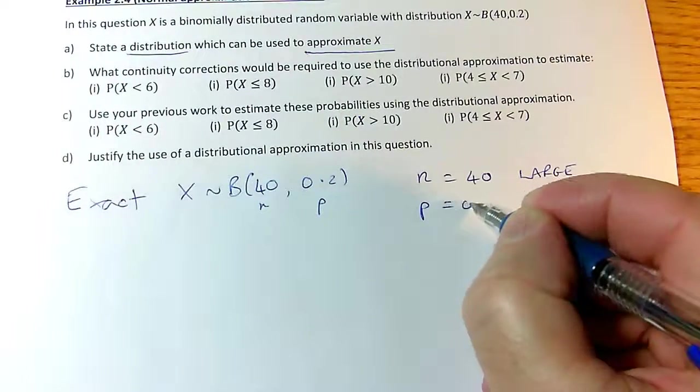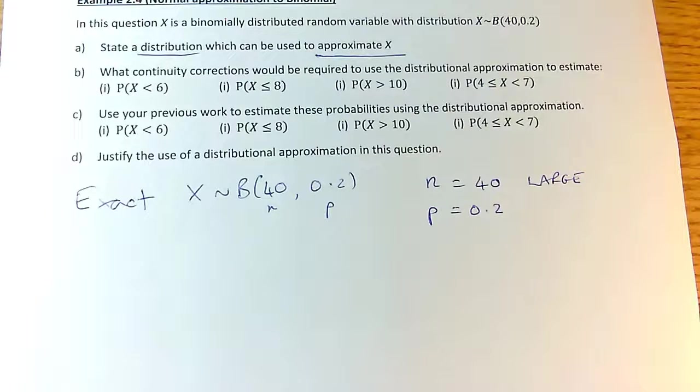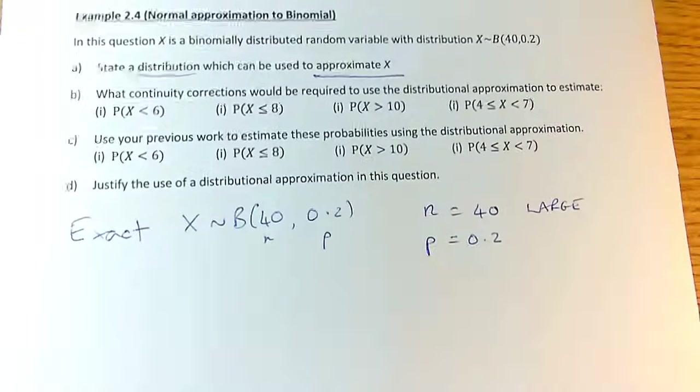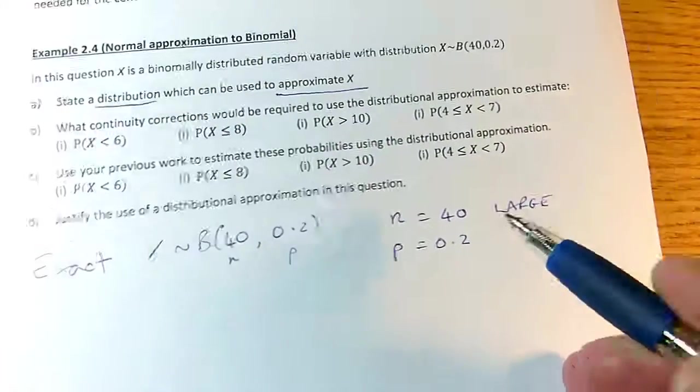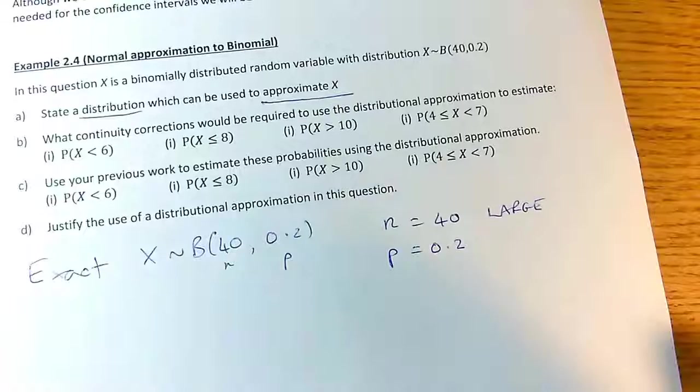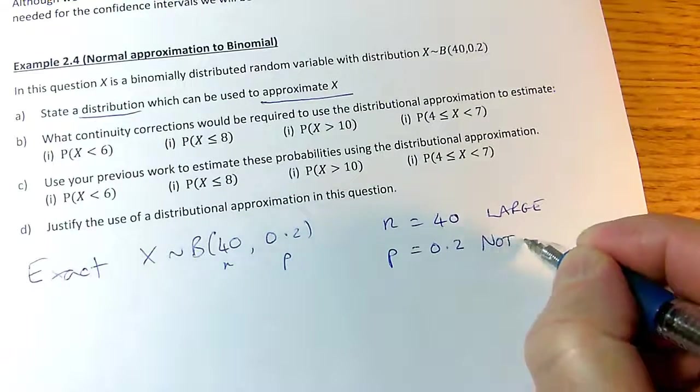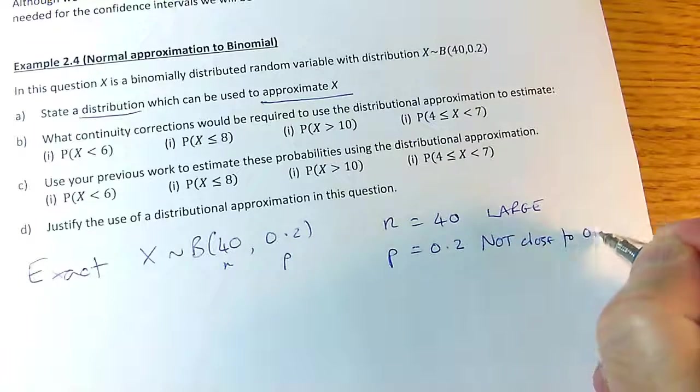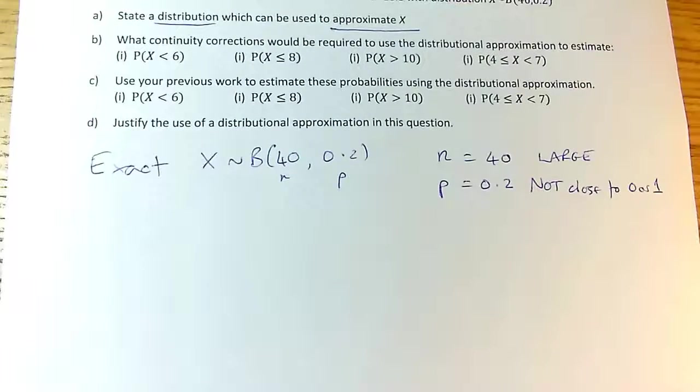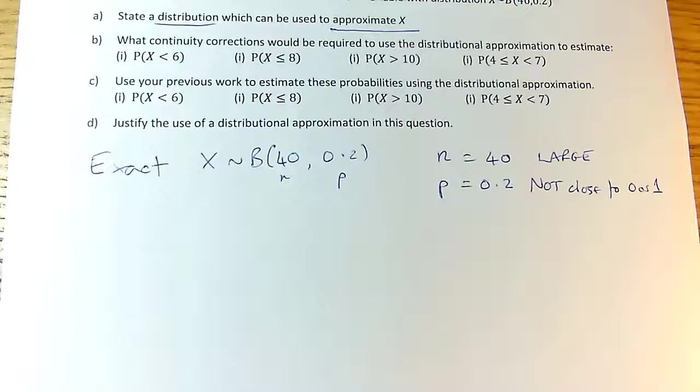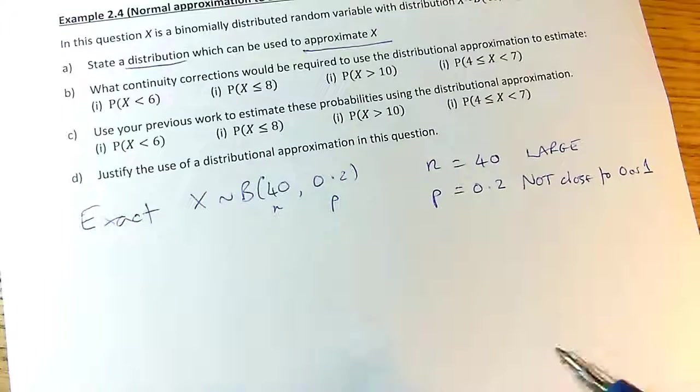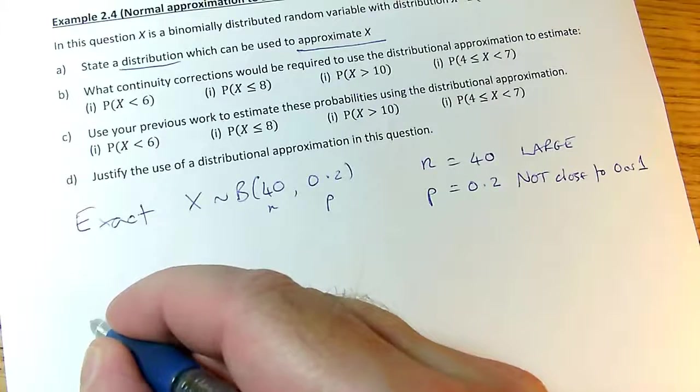And then my p value, which is 0.2. Now, is this small? No, it's not. To be small, it's got to be less than 0.1, I'd say. And in fact, I don't want it to be small because the approximation I think I'm going to be using is the normal one. So I want p to be not too close to 1 or 0. So p is a middling value, not close to 0 or 1. So that is how you set up. Those are the things we need to check for a distributional approximation to be valid. And in this case, if p is not close to 0 or 1 but n is still large, then we use a normal approximation.